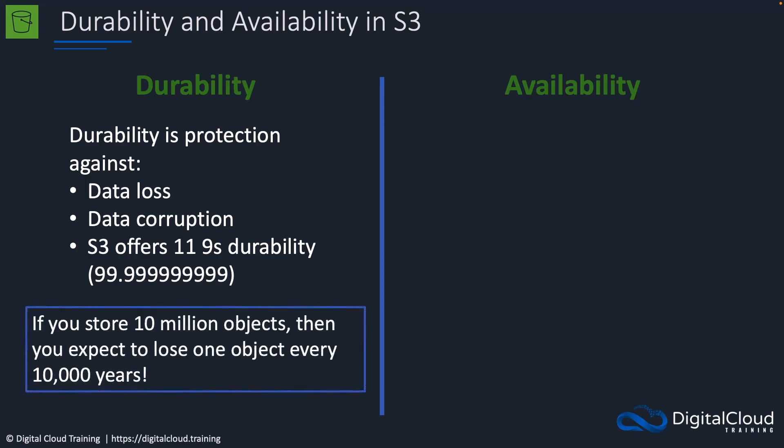In fact, if you store 10 million objects, you can expect to lose one object every 10,000 years. AWS achieves this by having many different copies of your data spread across different availability zones, so your data is protected in terms of durability from loss.